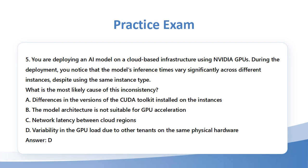Question 5: You are deploying an AI model on a cloud-based infrastructure using NVIDIA GPUs. During the deployment, you notice that the model's inference times vary significantly across different instances, despite using the same instance type. What is the most likely cause of this inconsistency? A. Differences in the versions of the CUDA toolkit installed on the instances. B. The model architecture is not suitable for GPU acceleration. C. Network latency between cloud regions. D. Variability in the GPU load due to other tenants on the same physical hardware. Answer: D.